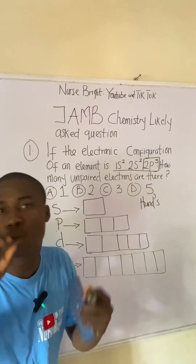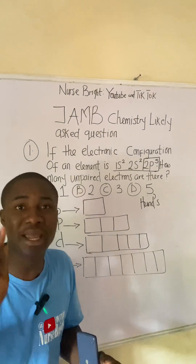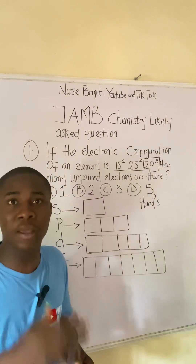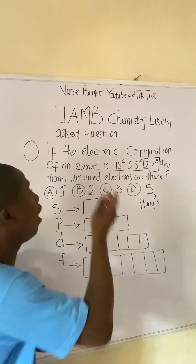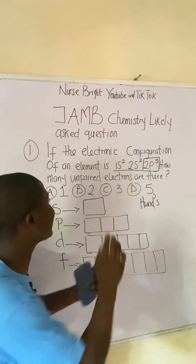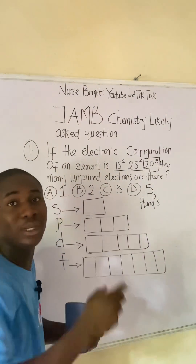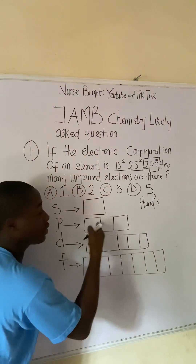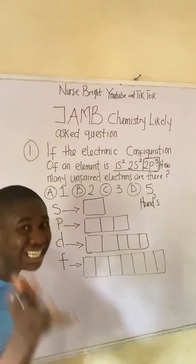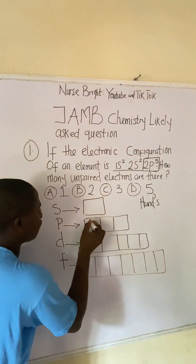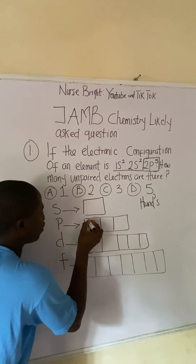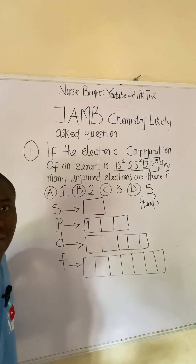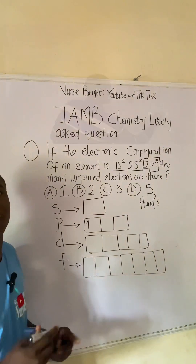We have five electrons inside this p orbital. Let's fill them singly first. We fill the first electron going up in the first box — that's how you fill an electron into the boxes. Go watch my full video lesson on quantum numbers to understand different aspects and concepts of this topic.